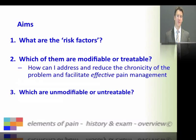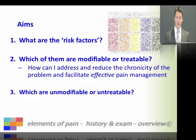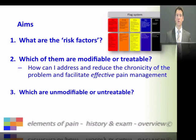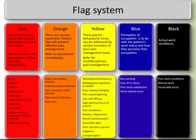It's also important to be aware of the things that you can't change, as this may or may not be relevant for your patient. The risk factors fall into five categories. This comes from an article in the British Medical Journal by Main and Williams looking at risk factors for patients with pain. You would consider them under various flag systems: the red flags, the orange flags, the yellow, blue, and black flags.